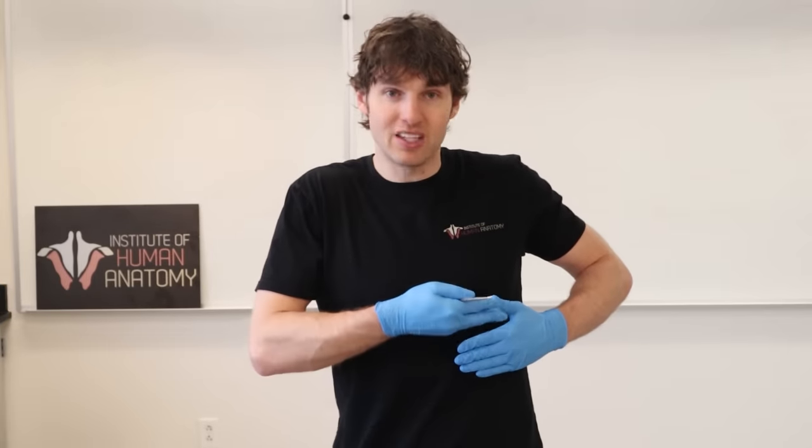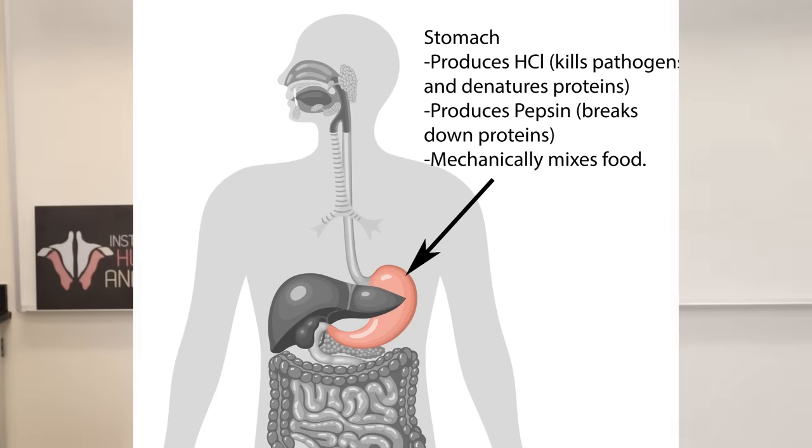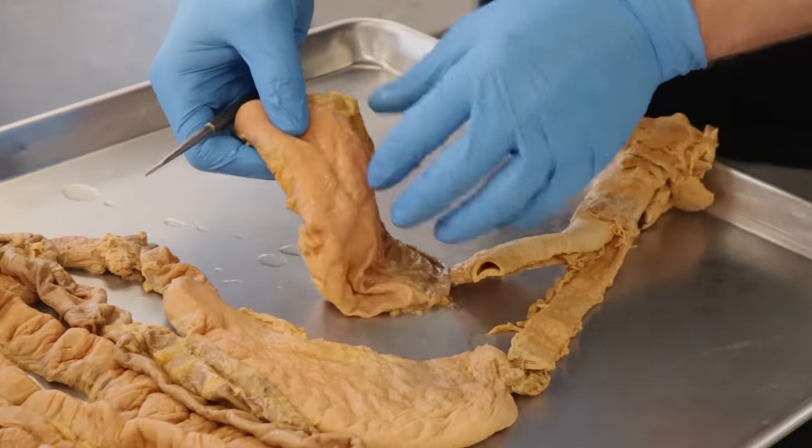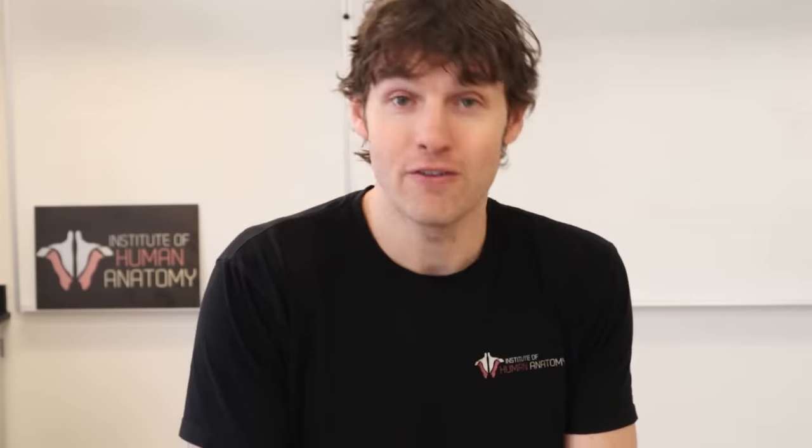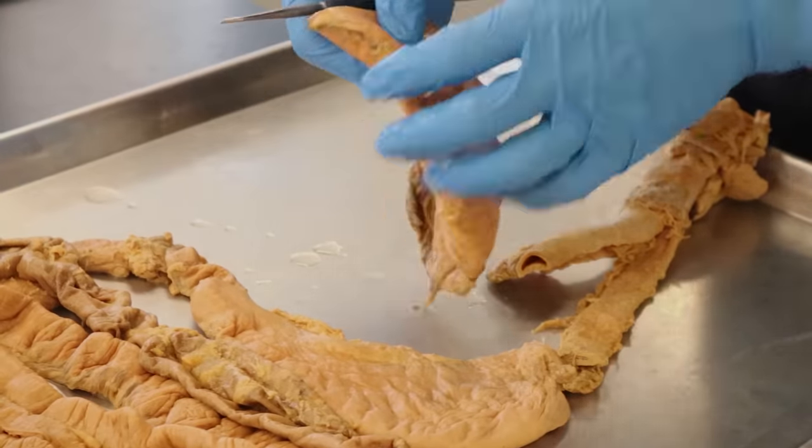The stomach produces hydrochloric acid and literally churns and mixes the food. As far as location, it sits in the left upper quadrant, partly tucked underneath the ribs, and sometimes the liver will cover part of it. One really cool thing about the stomach is that it can stretch out enormously — think of a big Thanksgiving dinner. On this dissected stomach you can see amazing folds called gastric rugae — gastric meaning stomach, rugae meaning folds — and these allow the stomach to stretch out for that food baby.